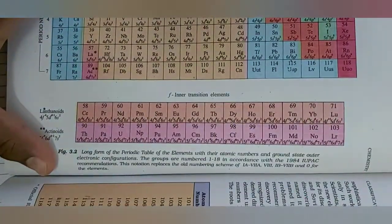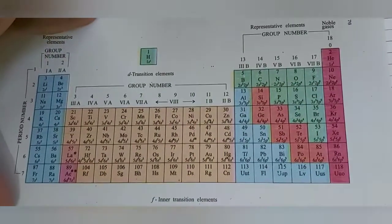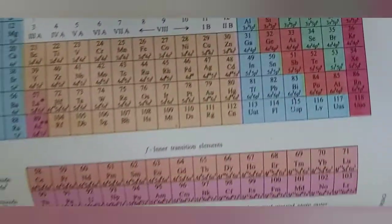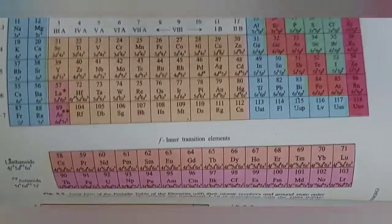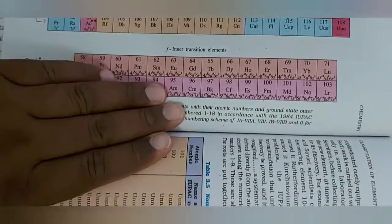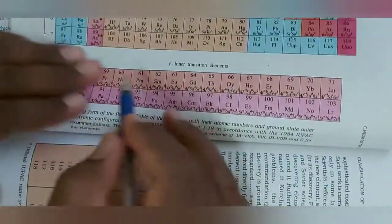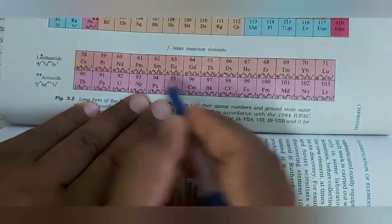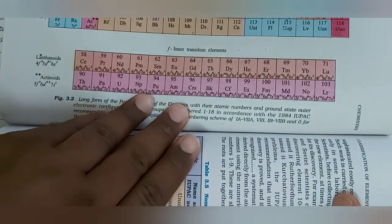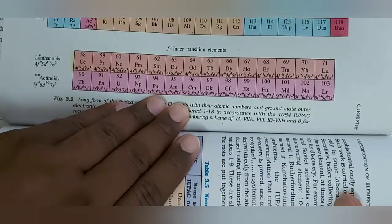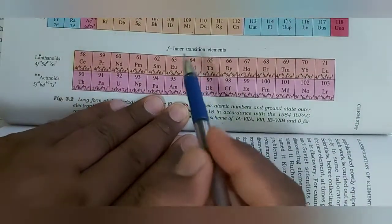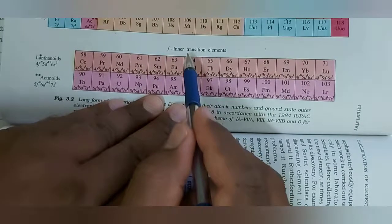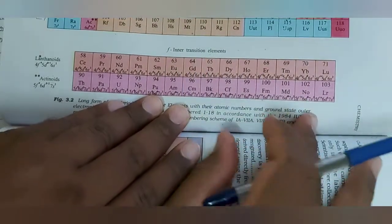This is the total periodic table. In this periodic table, separately under the body they have kept two rows. These two rows are called F block elements, which are also called inner transition elements.